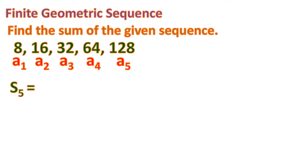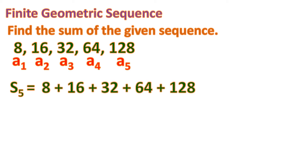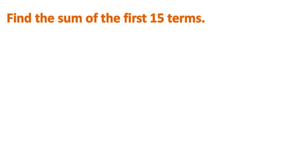To find the sum, we denote this S sub 5. Since it's only five terms, we can simply add them: 8 + 16 + 32 + 64 + 128, which equals 248. That's how easy it is.